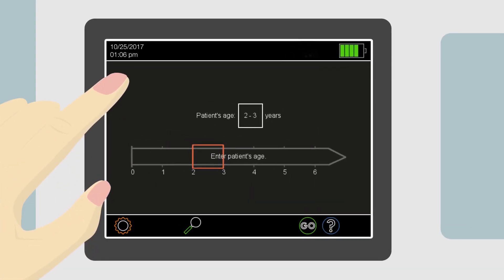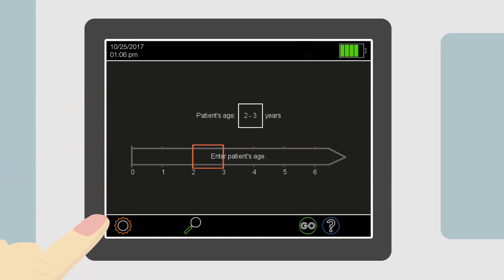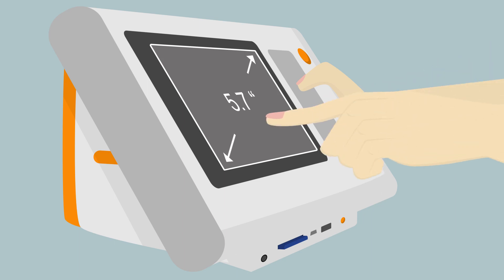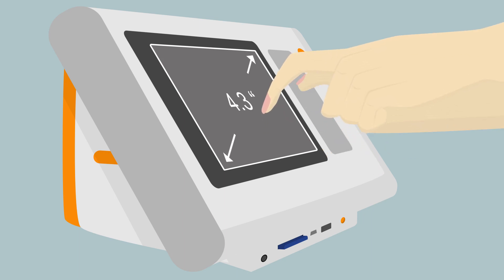The screensaver and auto shutoff timers can be adjusted on the settings page. The PlusOptics S12C model has a 5.7 inch capacitive screen, meaning it will respond to the skin of your finger or a stylus touching the screen. The PlusOptics S12R model has a 4.3 inch resistive screen, meaning it will respond to the pressure of your fingernail or a blunt pen tip touching the screen.